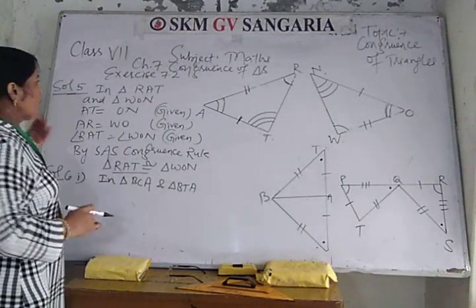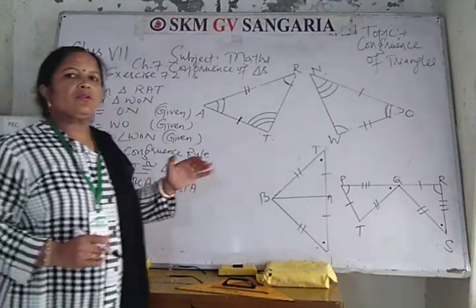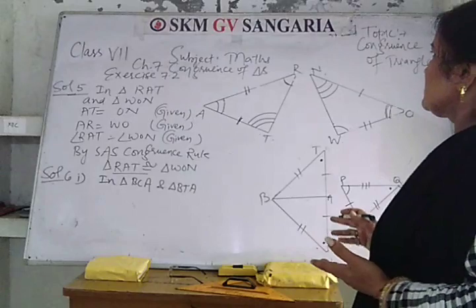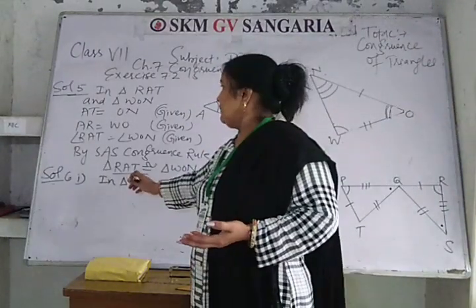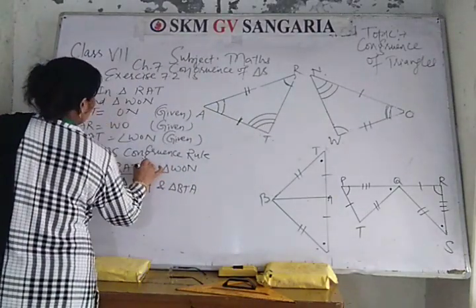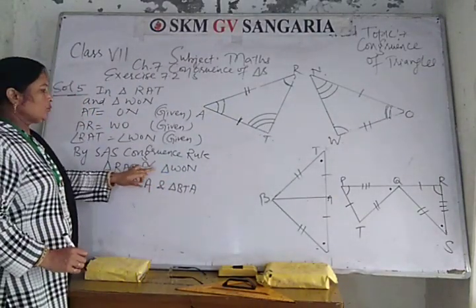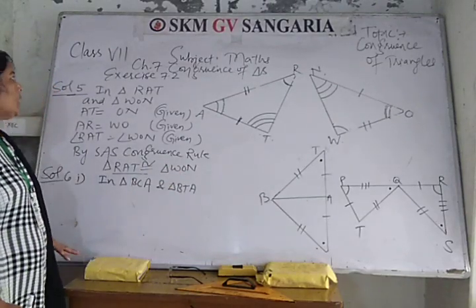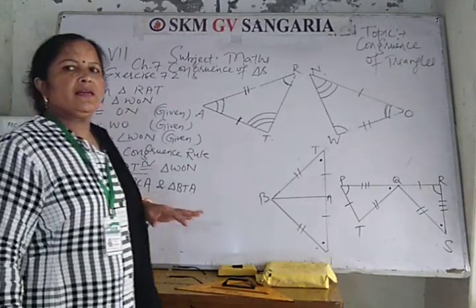So what we conclude is that by SAS congruence criteria, the triangles — triangle RAT is congruent to triangle WON. The congruence criteria used here is SAS: side AR, included angle A, and side AT correspond to side WO, included angle O, and side ON.